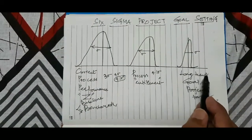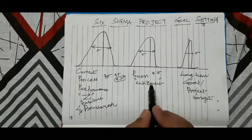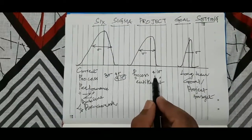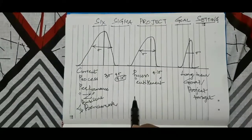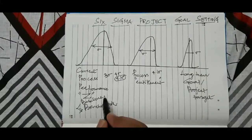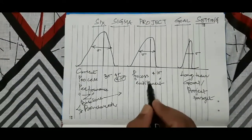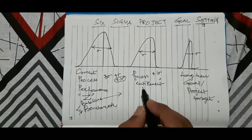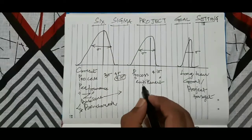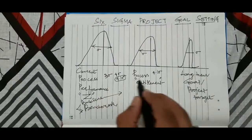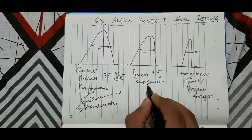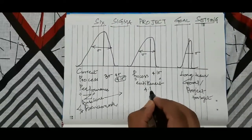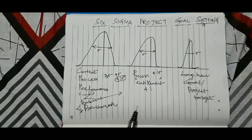The first thing we have to do is strive to achieve that entitlement level. By setting up the baseline, the current entitlement — the best operating process figure — becomes the short-term goal. In this example, the entitlement is 4.1 sigma, so that becomes the first short-term goal to achieve.